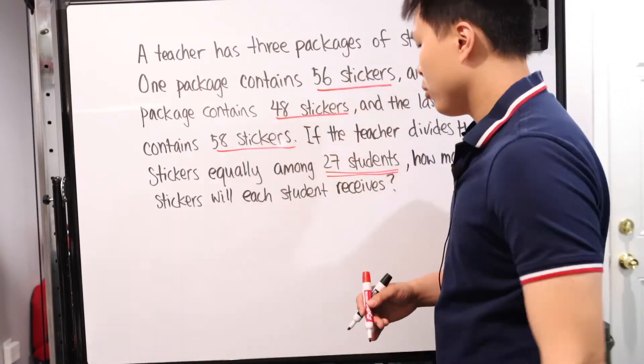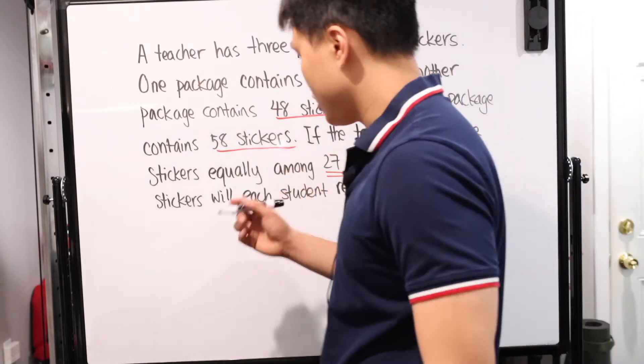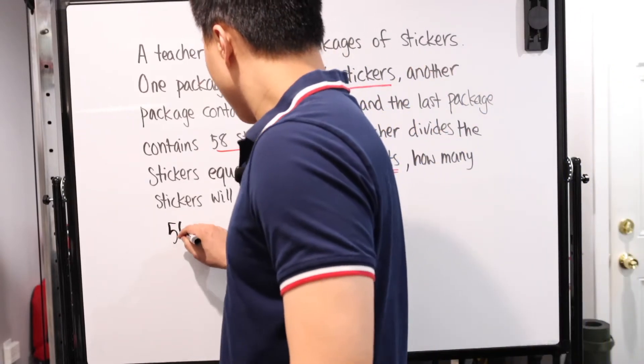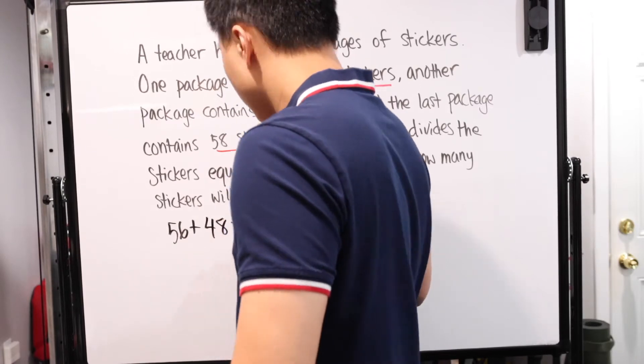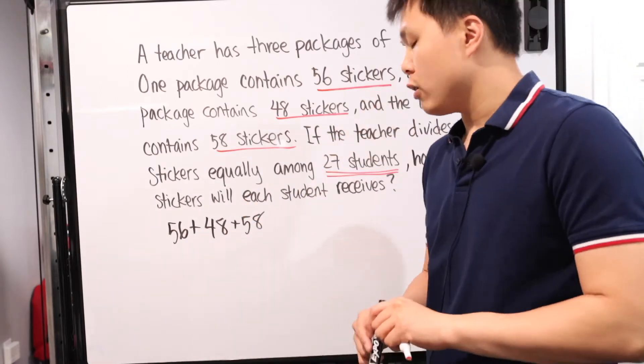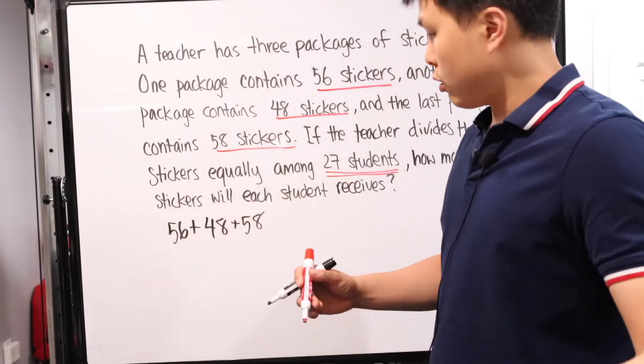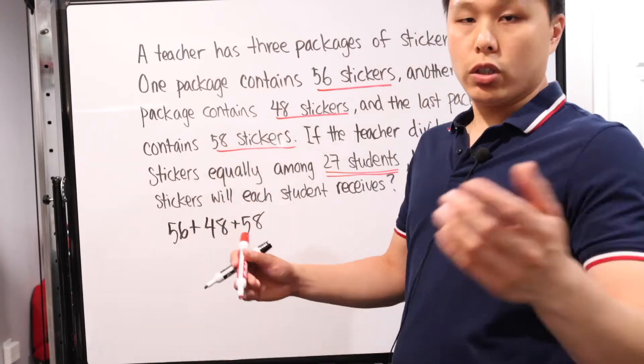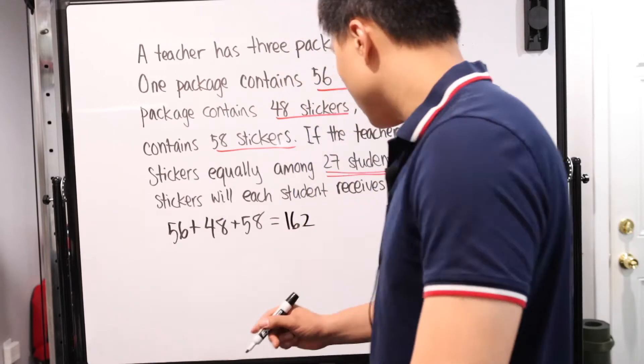How many stickers do we have total? We're gonna give everyone equal amounts, so we'll divide by that. All we have to do is figure out the total, add these three numbers together, then divide by 27. We have 56 plus 48 plus 58. You can add straight across if you want. 56 plus 58 is 114 plus 48, that's 162. We know there's a total of 162 stickers.